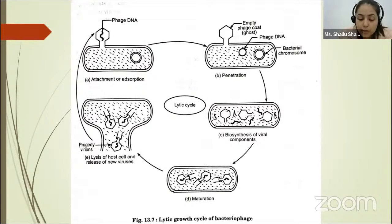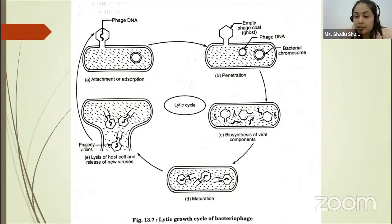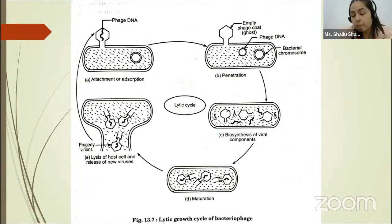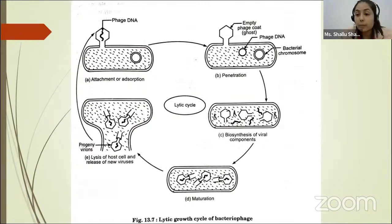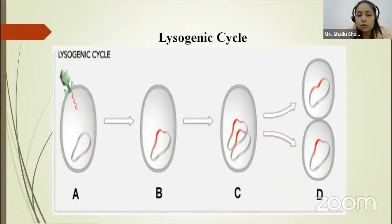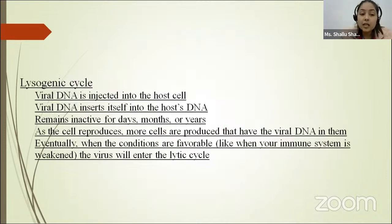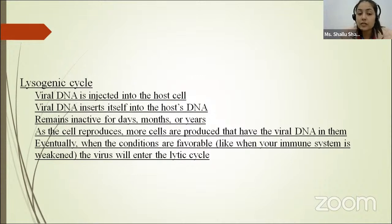The fifth step is maturation — also called viral assembly or encapsulation — where the newly produced capsid proteins combine with the nucleic acid to form a viral nucleocapsid. The final step is release, the last step in virus replication, resulting in the release of mature virions from the host cell. Viruses can replicate via the lytic growth cycle or the lysogenic cycle. In the lysogenic cycle, the virus remains inactive for days, months, or years, and when conditions are favorable — such as when the immune system is weakened — it enters the lytic cycle.